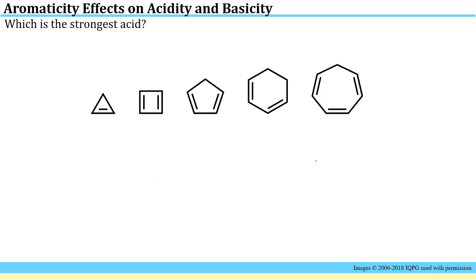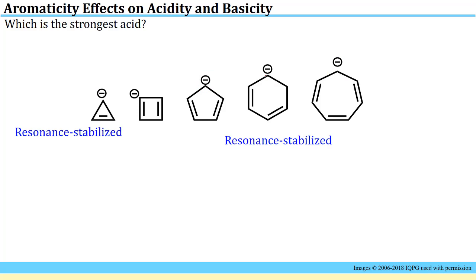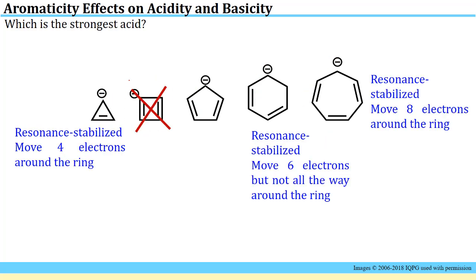Our understanding of aromaticity-endowed stabilization can also help us determine relative acid strengths. Here, we have a set of hydrocarbons and we must identify the strongest acid. The strongest acid has the most stable conjugate base, so after removing a proton from each site, we consider how well the resulting negative charge is stabilized. Some cases have resonance stabilization and some do not. One case lacks resonance stabilization entirely, making it a poor candidate. The remaining four all have resonance stabilization, and since they are rings, we check whether any gain additional stability by becoming aromatic.